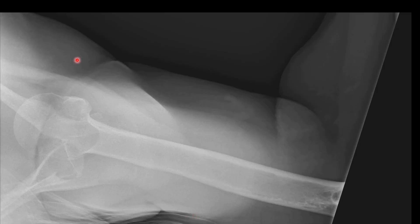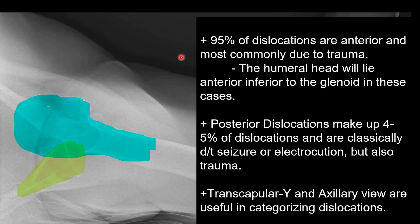Here we have an axillary view of the shoulder. This is the anterior portion of the patient; this is posterior. Here is our glenoid, and here is the humeral head, which is again dislocated anteriorly. 95% of dislocations are anterior dislocations and are usually traumatic in nature. 45% of dislocations are going to be posterior dislocations and are traditionally due to seizure or electrocution, but can also be seen in trauma. The transcapular Y view and axillary view are going to be helpful views for us to be able to categorize these dislocations.